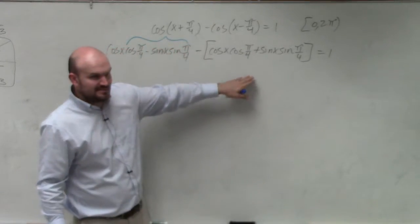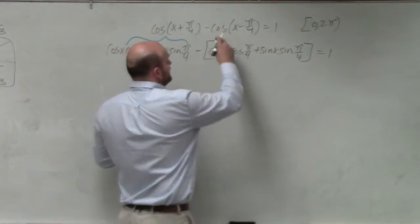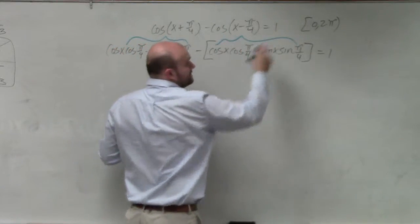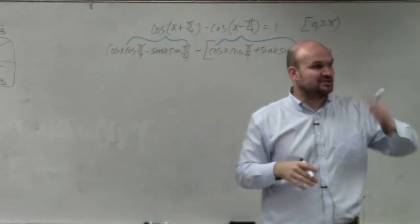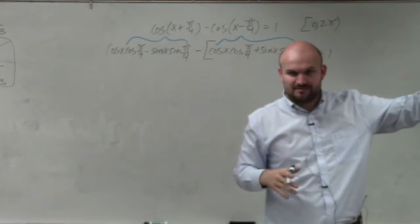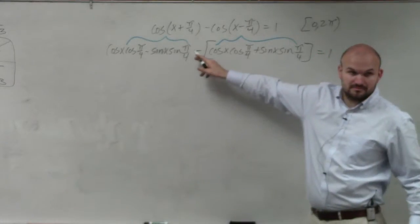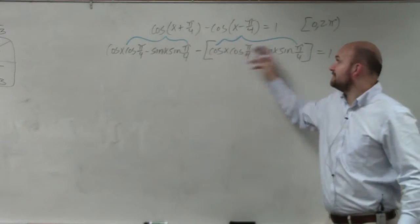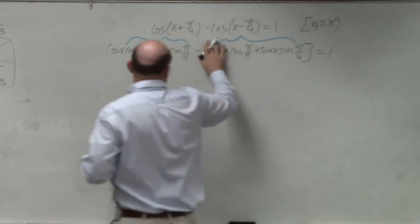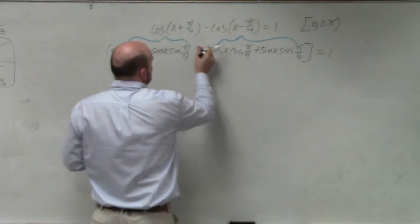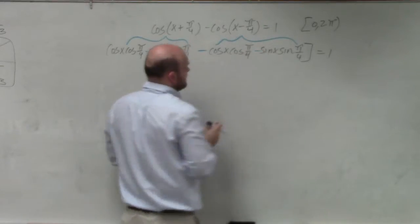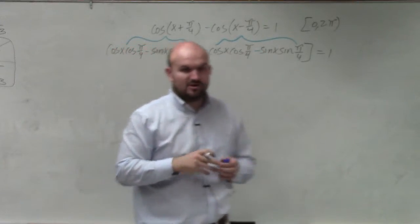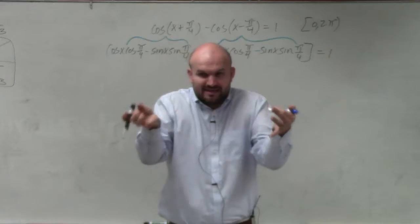But does everybody see this? That's what I did. Now, I can get rid of these brackets. All I have to do to get rid of the brackets is just distribute that negative. Right? So if I multiply everything by negative 1, I'll have a negative cosine of x. And this would be a negative sine of x.